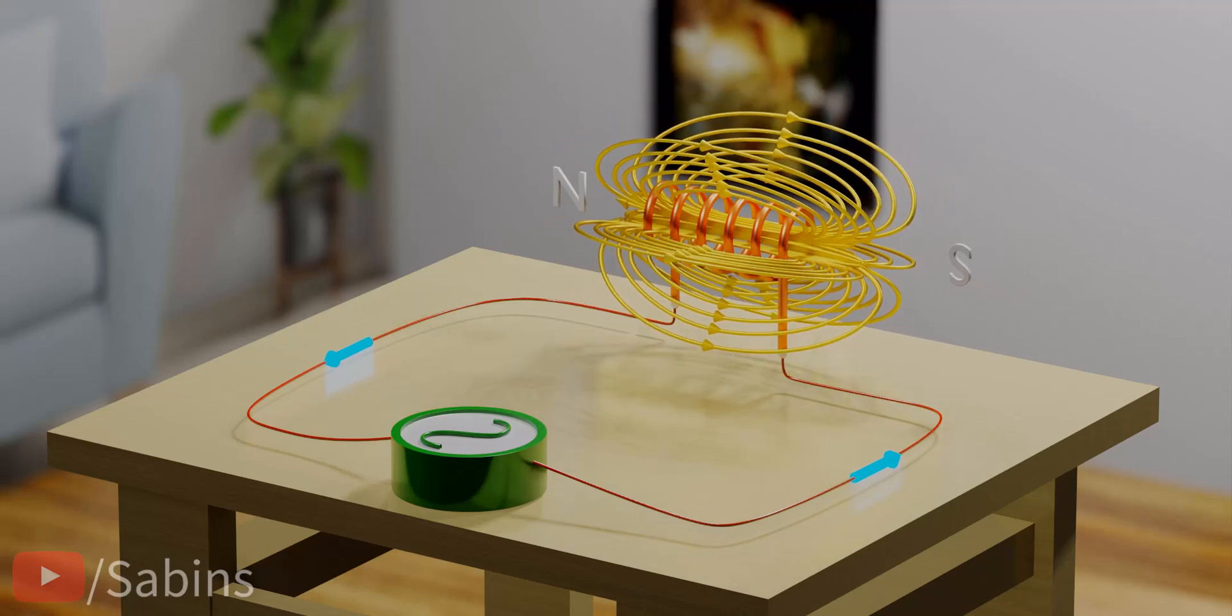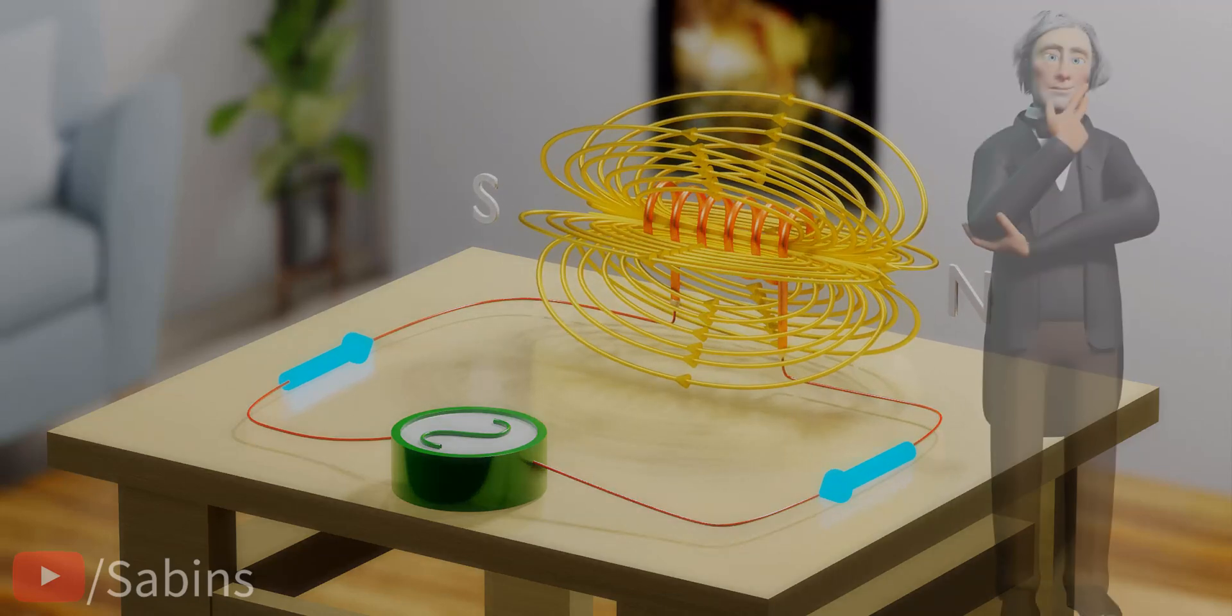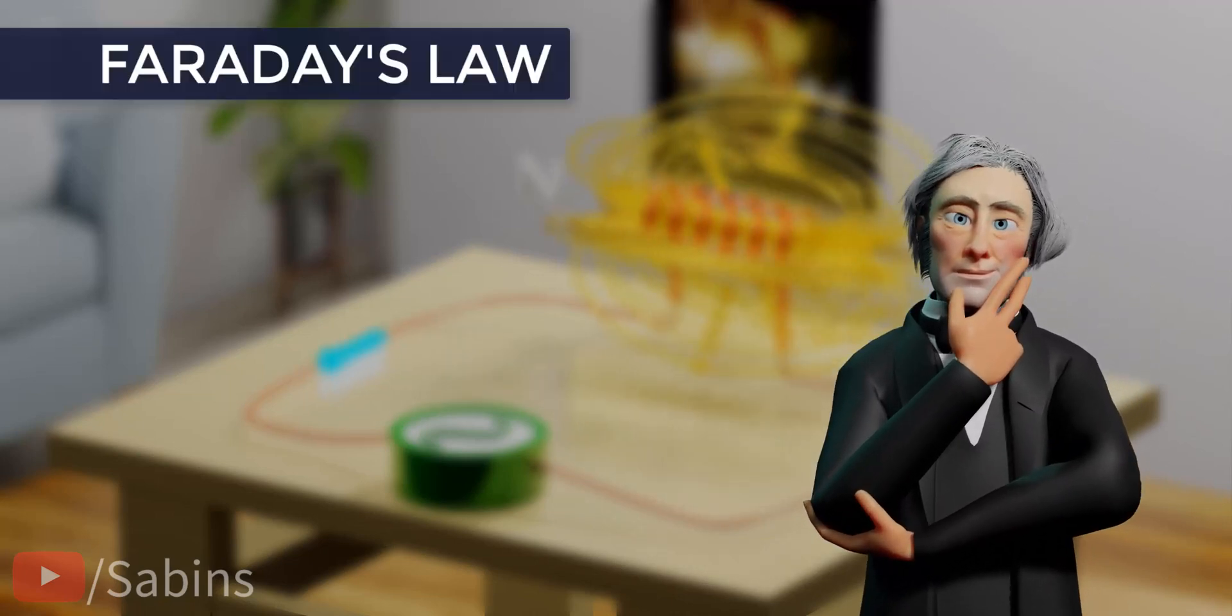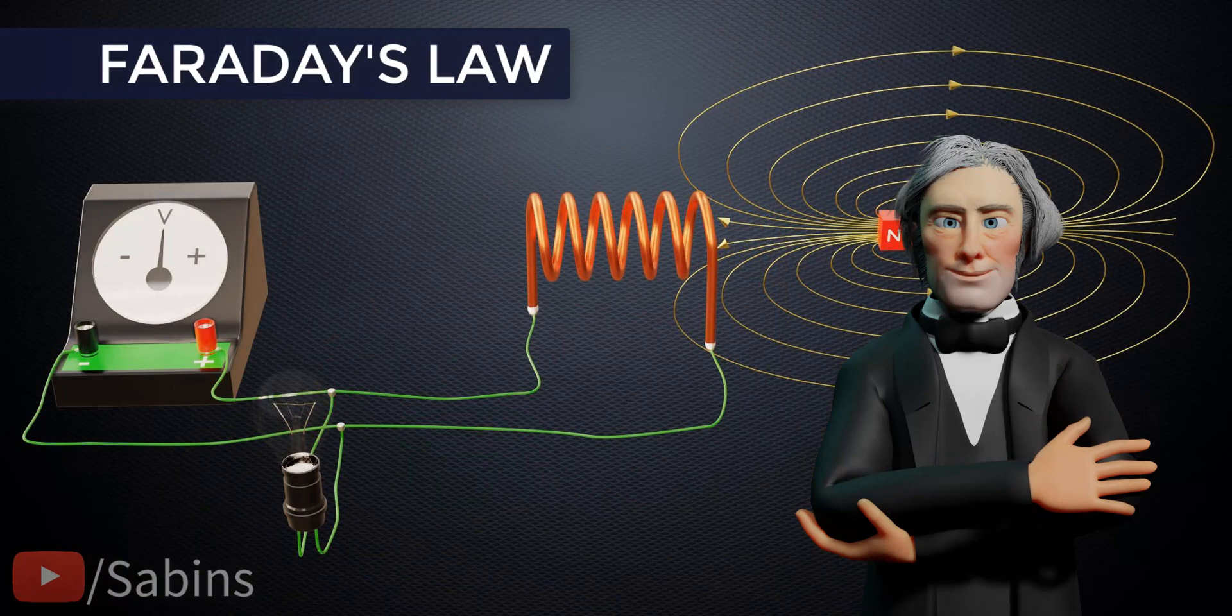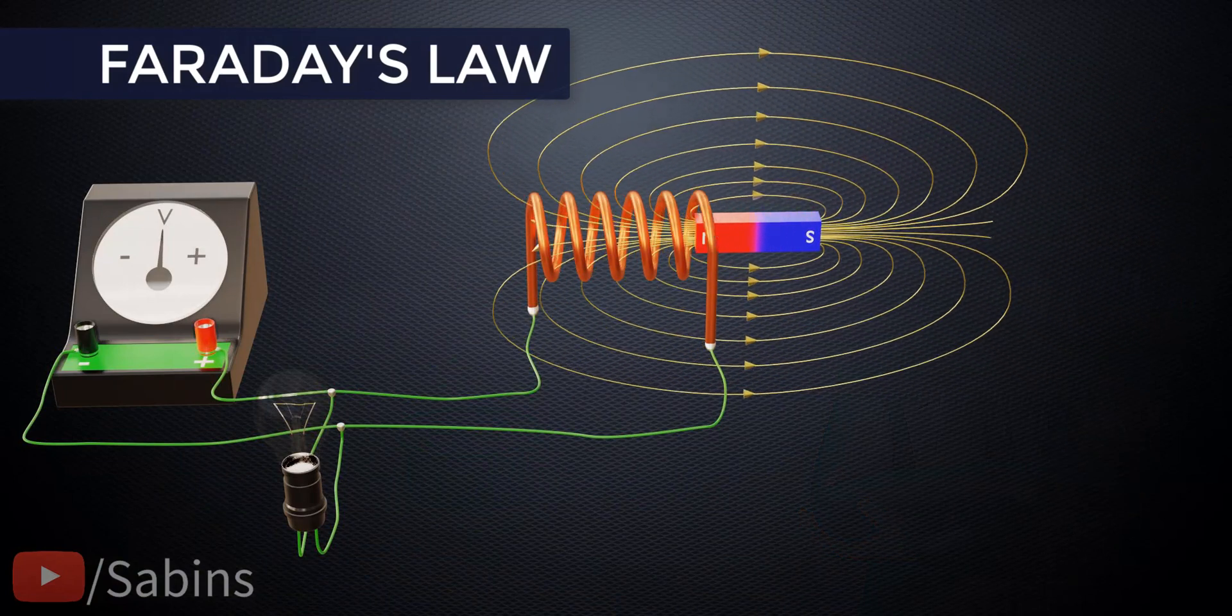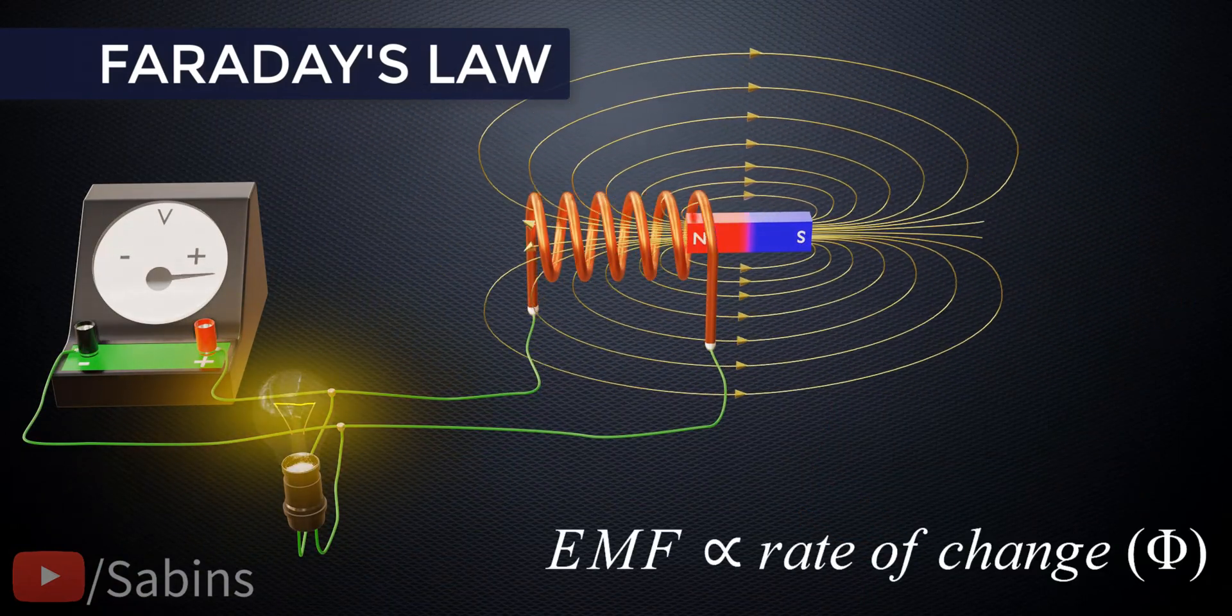To study the effect of varying magnetic flux on a coil, we need to introduce Faraday's Law. The great scientist, Michael Faraday, said if the magnetic flux changes across a loop, it will induce an EMF across it.